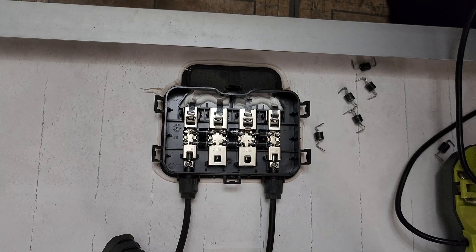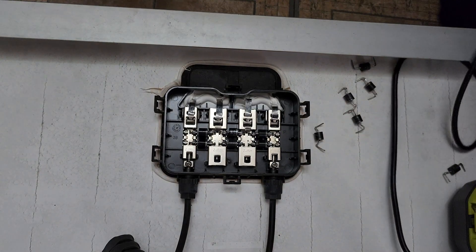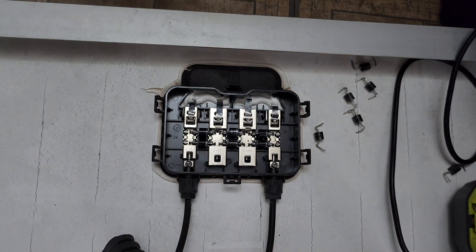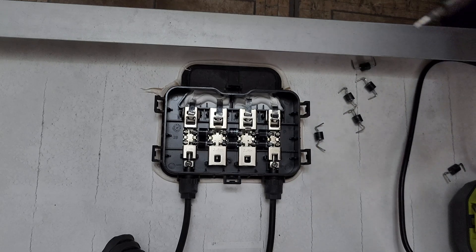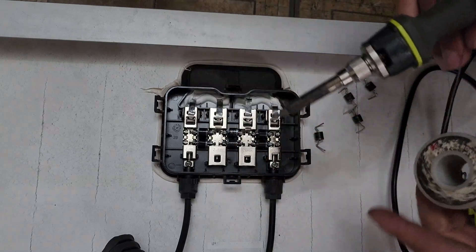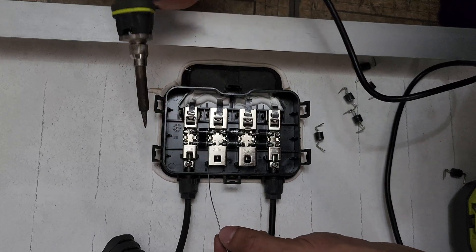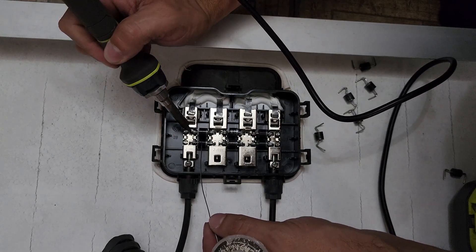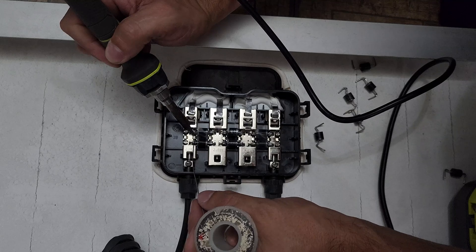With all six of the diodes in and facing the correct direction, go ahead and solder them into place. Place the tip of your soldering iron to the solder pad on the panel to heat it up and feed some new solder in to cover the new diode legs and let them sink into the solder pads for a secure connection.